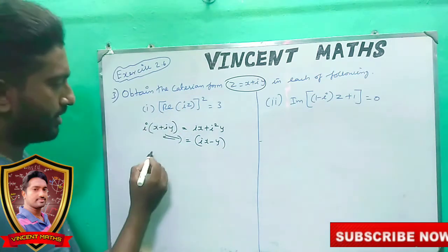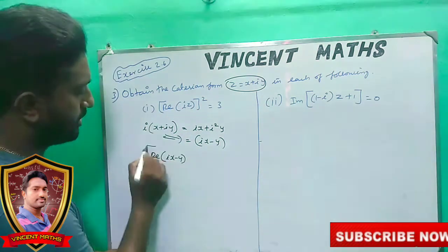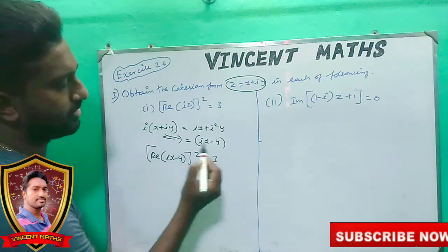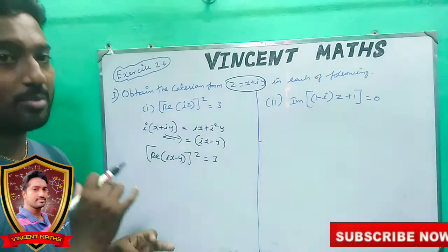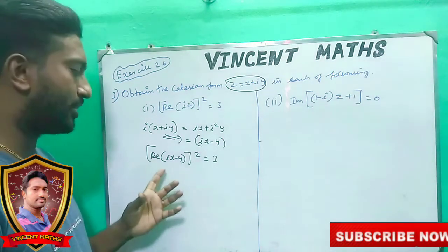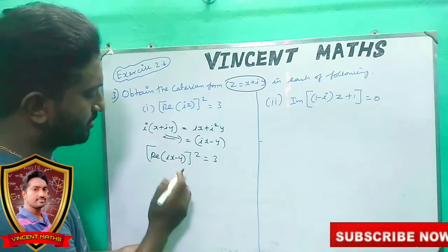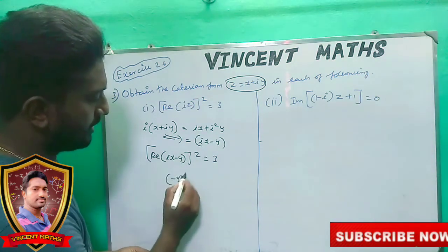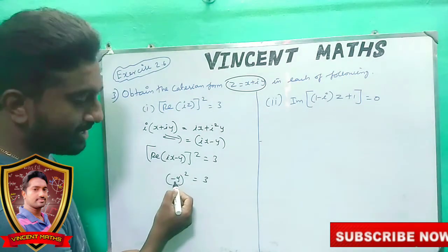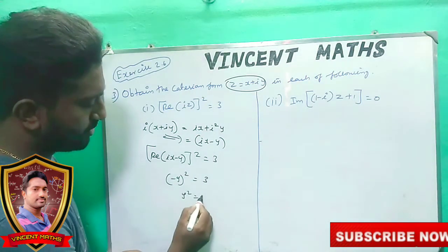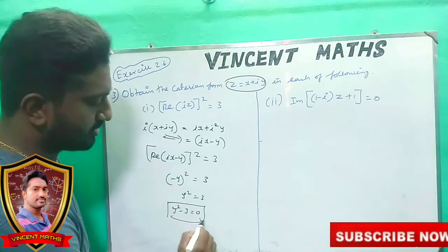Let us substitute this here. That is, the real part of ix minus y equals 3. Now, what is the real part of ix minus y? The real part is minus y. So minus y equals 3, which gives us y² equals 3, and y² minus 3 equals 0.